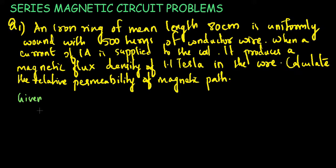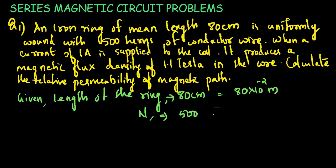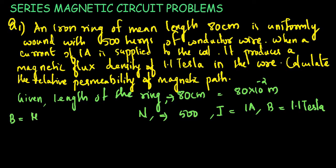Given conditions: length of the ring L is 80 cm, which is 80 × 10⁻² meter. Number of turns N is 500. Current I is 1 ampere. Magnetic flux density B is 1.1 tesla. We need to find relative permeability. The formula is B = μ0 × μr × H, where H = NI divided by L.